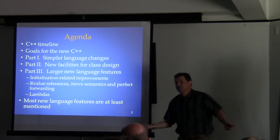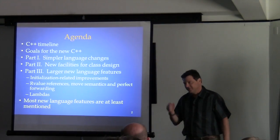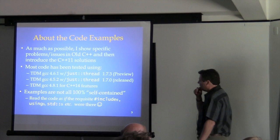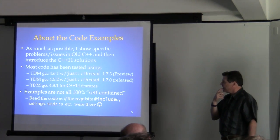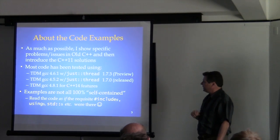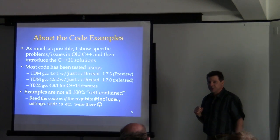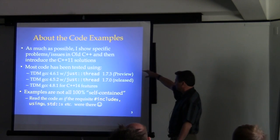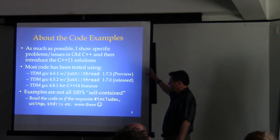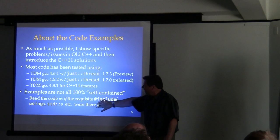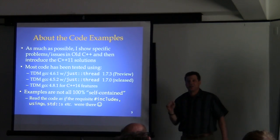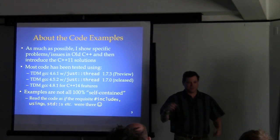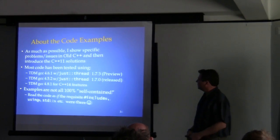I try to at least mention just about every language feature I'm aware of — there's at least a line on it somewhere, though not a whole lot of gory detail on some of it. The code you see has been tested on several versions of TDM, which is a nice version of GCC with a Win32 installer. The examples are not necessarily compilable as you see them on the slides, because I cut off things like includes and namespace qualifiers just to make them fit.